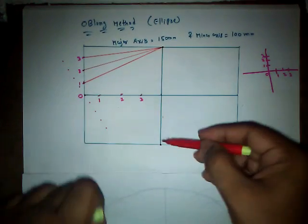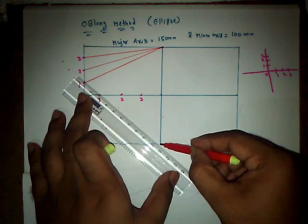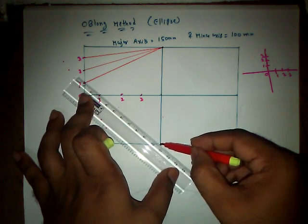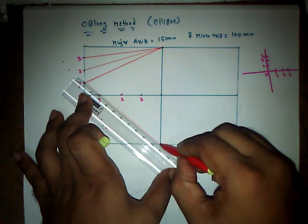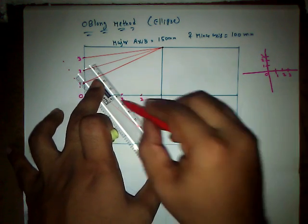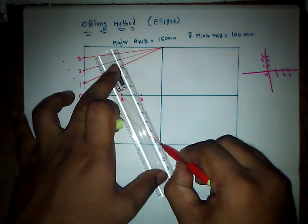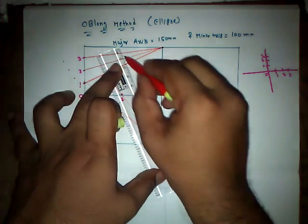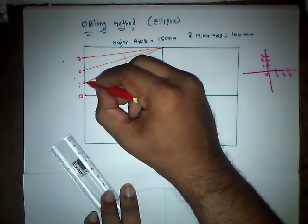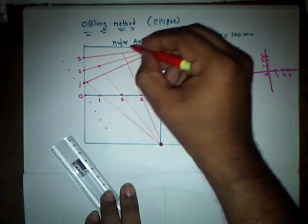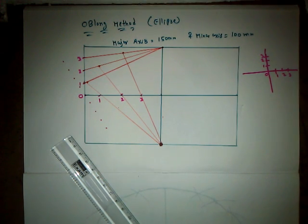Now move to the other end of the minor axis. Draw lines joining the x-axis points and touching line number 1. In the same manner, draw a line through point 2 extending and touching line number 2, and similarly point number 3 touching line number 3. This is how we got the required points — P1, P2, and P3.